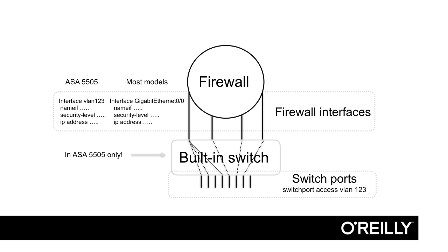We connect the physical interfaces to the VLAN interfaces with the switchport access VLAN command on each physical interface. That makes a logical and virtual connection between the VLAN interfaces with name-if, security level, and IP address, and the physical interfaces. We can connect one, two, three, or many physical interfaces to the same VLAN interface in the firewall. In this example, the leftmost firewall interface is connected to three different switch ports, which we can use as a switch to connect to that firewall interface. The 5505 is an exception — in all other firewalls, we configure name-if, security level, and IP address directly on the physical interfaces, except for the 5505, where we configure that on VLANs and add switch ports with switchport access VLAN and a number.